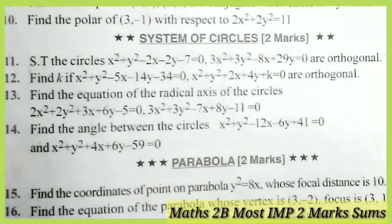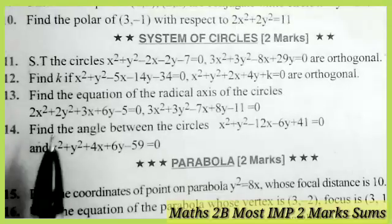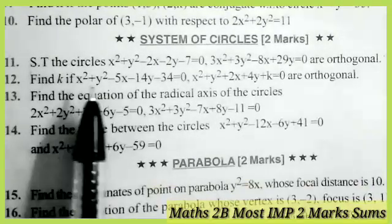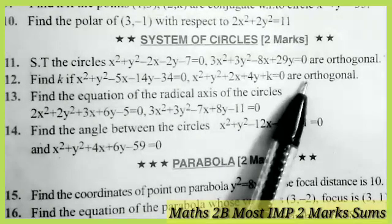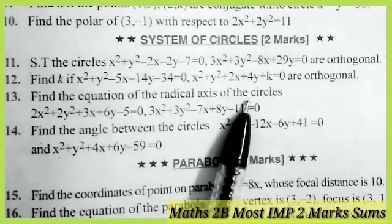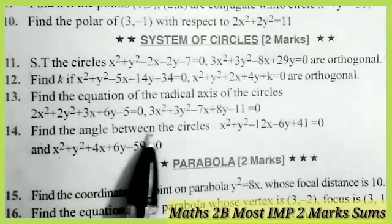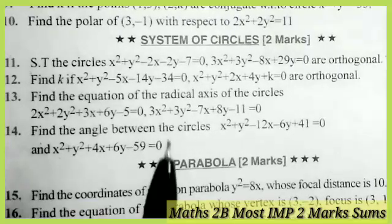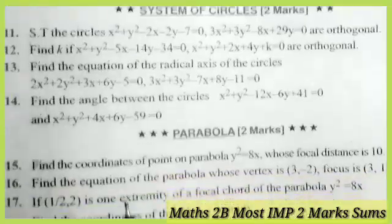See the next topic: system of circles. These are the only frequently repeating models. First: show that the circles are orthogonal. Second: find the value of K if the circles are orthogonal. Next one: find the equation of the radical axis of the two circles. Next one: find the angle between the two circles. These four are the most frequently repeating model questions from system of circles.